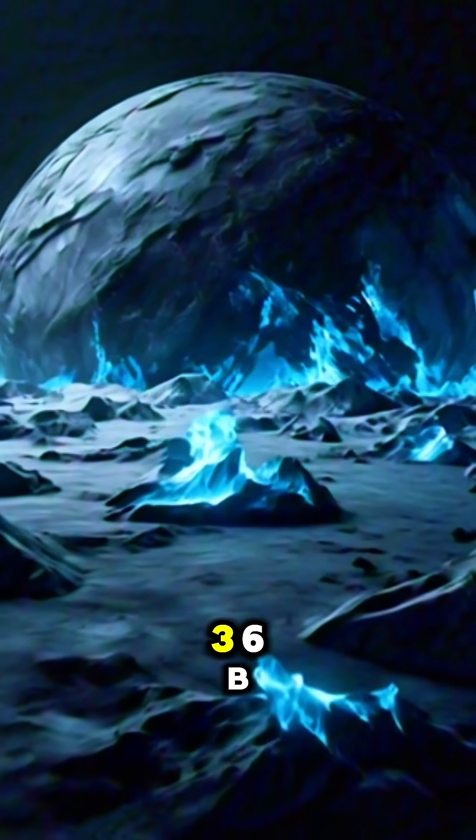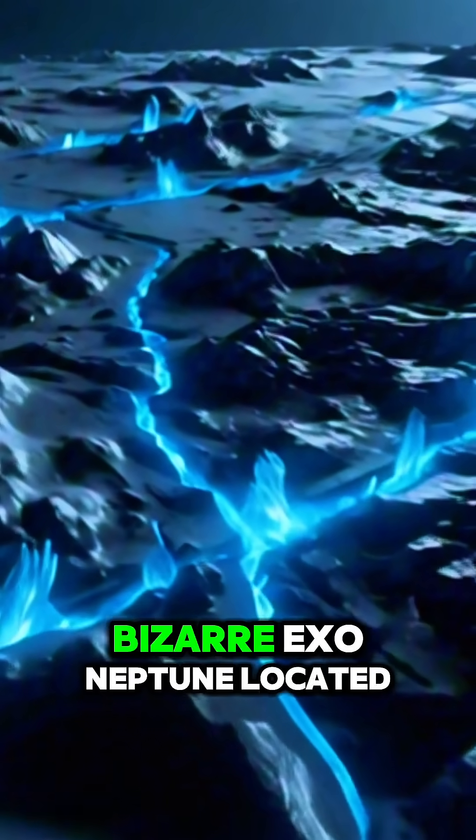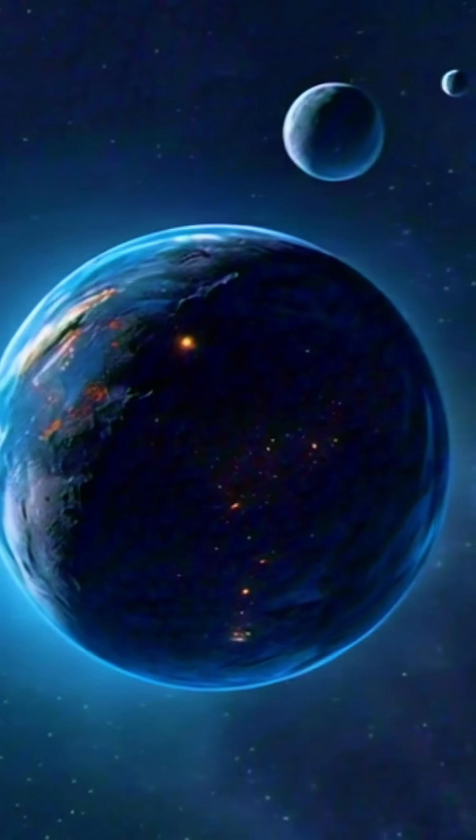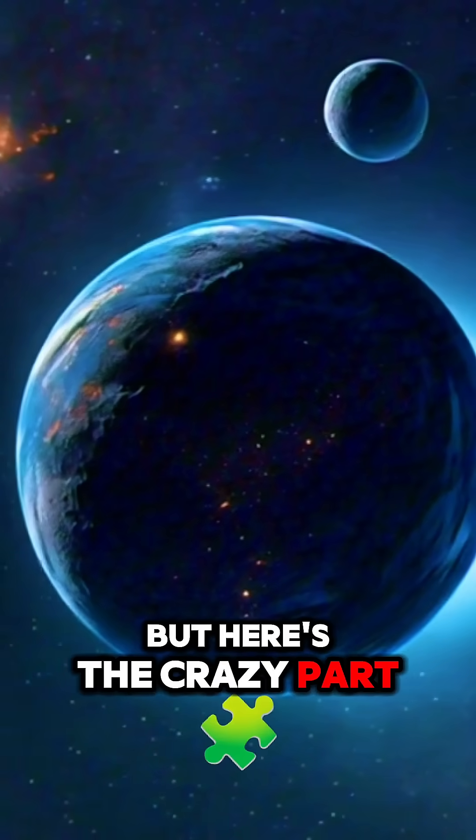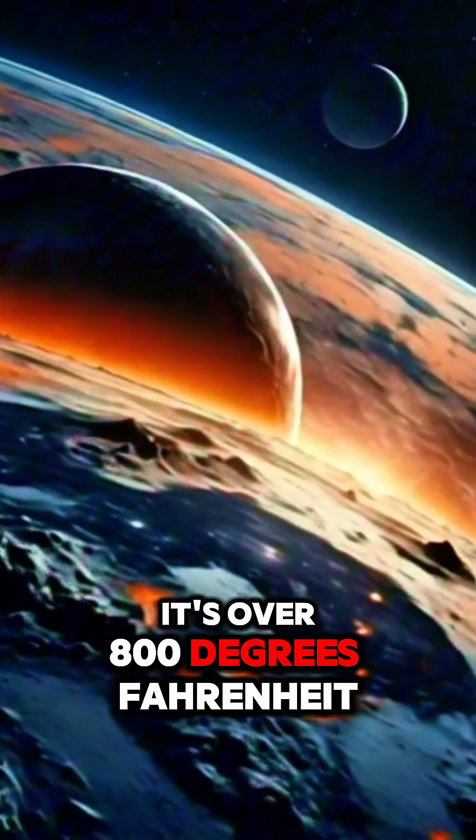Well, welcome to Gliese 436 b. Gliese 436 b is a bizarre exo-Neptune located 33 light years away from Earth. But here's the crazy part. Despite being covered in ice, it's over 800 degrees Fahrenheit.